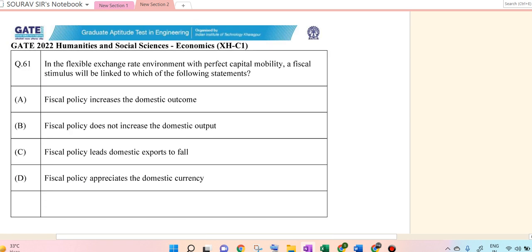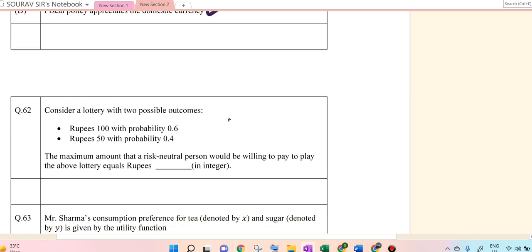Let's go to the next one, question 61. In a flexible exchange rate environment with perfect capital mobility, fiscal stimulus will lead to which of the following statements: Fiscal policy increases domestic income - no, that's not correct. Fiscal policy does not increase - yes. Fiscal policy ensures domestic exports fall and fiscal policy appreciates domestic currency - yes. So B, C, D are the three answers here.